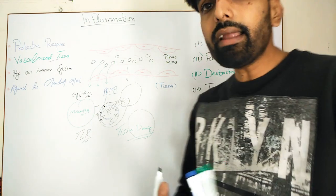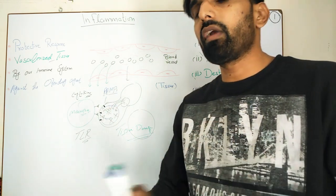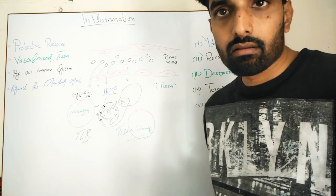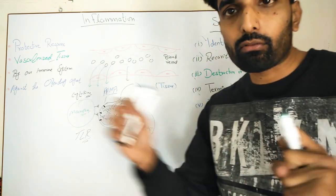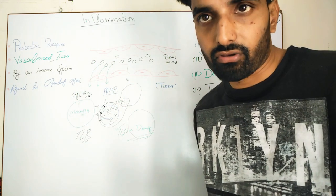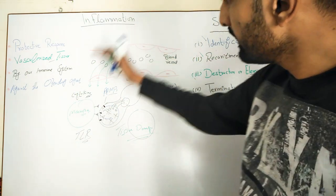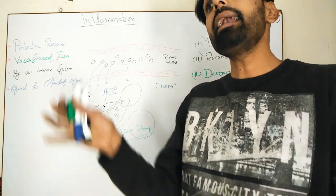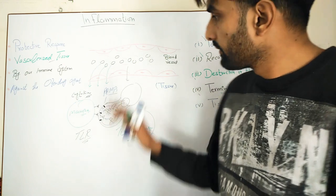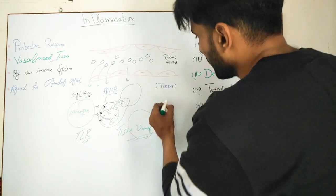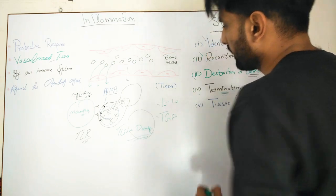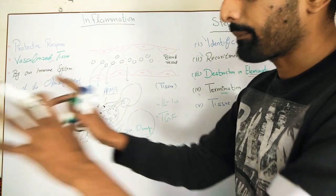The fourth step is termination. Once the destruction and elimination of the pathogen or offending agent has taken place, we want the inflammation to stop and the white blood cells to cease performing their function. Inside our body there are anti-inflammatory mechanisms to terminate the process of inflammation. Anti-inflammatory cytokines such as interleukin-10 and TGF — transforming growth factor — will be secreted and the process of inflammation will be stopped.